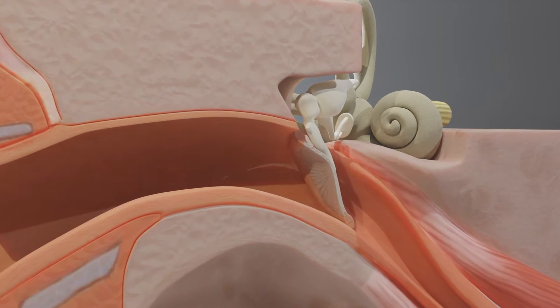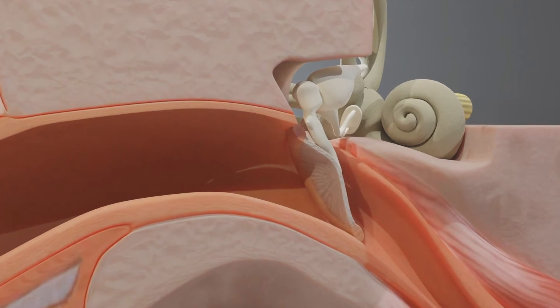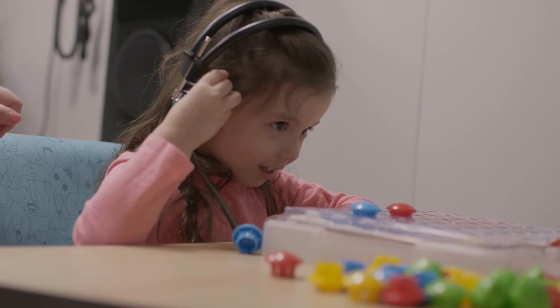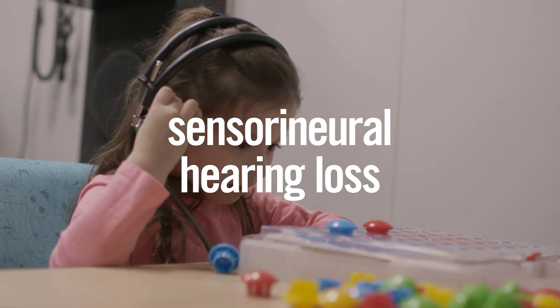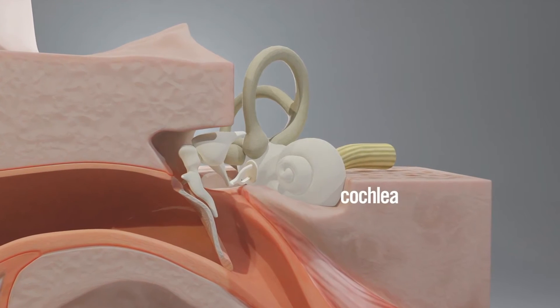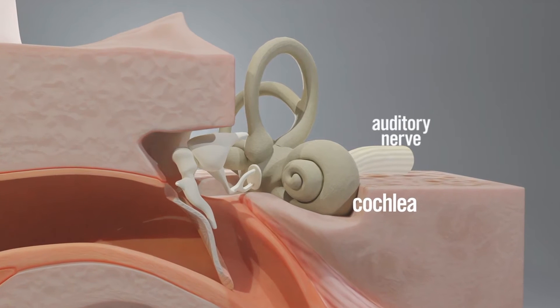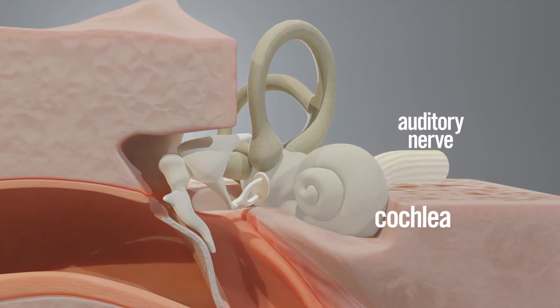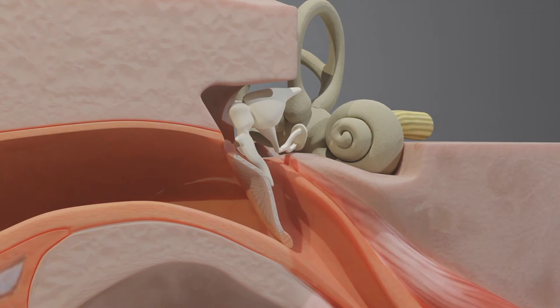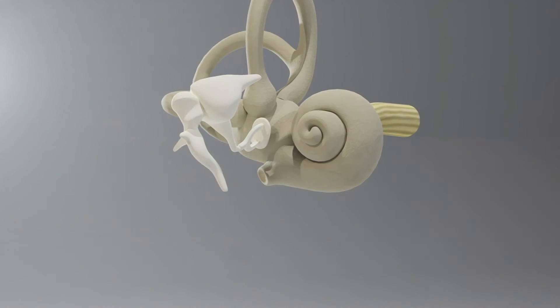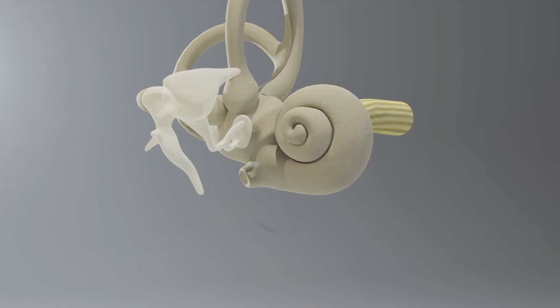This is called conductive hearing loss. This type of hearing loss can usually be fixed with medicine or surgery, like ear tubes that are placed in the ear. Another kind of hearing loss is called sensorineural hearing loss because it can include different types of hearing loss — sensory, which happens when the cochlea doesn't work well or not at all, and neural, where the auditory nerve or other parts of the brain are affected, or even a combination of both.